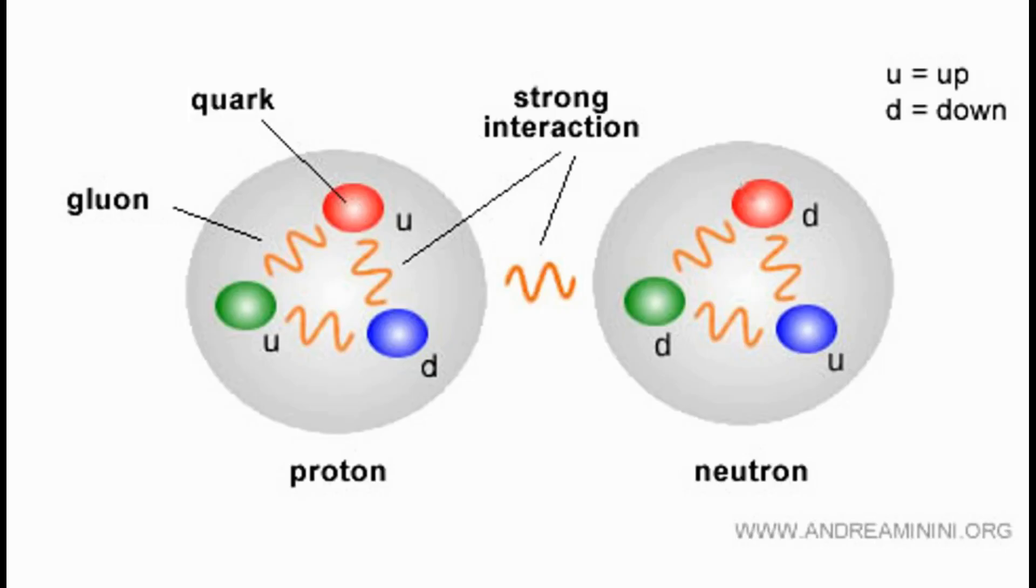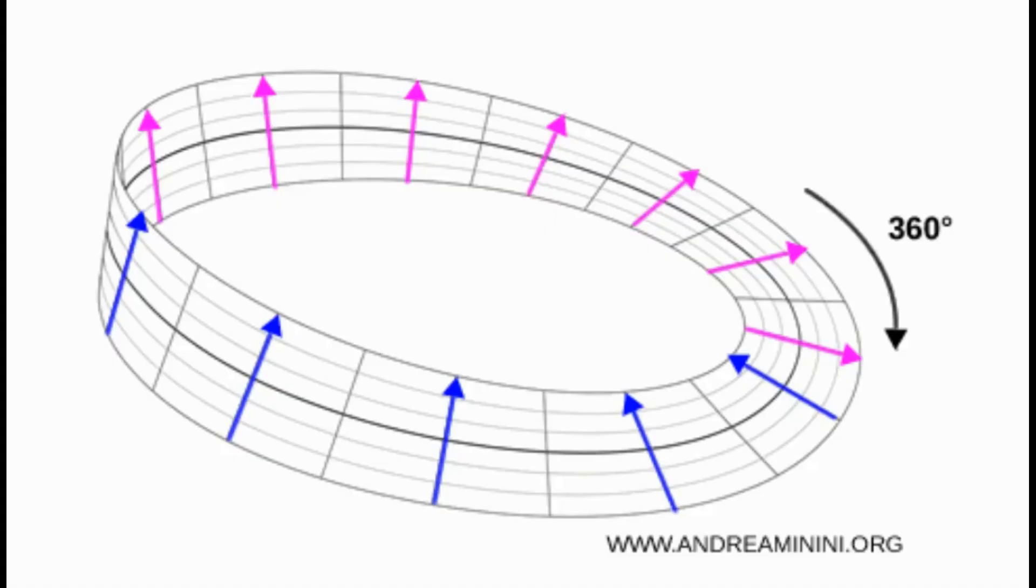Just when I think it can't get any stranger, our sources bring up the 720-degree rotation. Yes! If I rotate this cup 360 degrees, it's back to where it started. Simple. But an electron isn't. That's correct. You rotate an electron 360 degrees, and its mathematical description, its wave function, is inverted. It's out of phase with where it started. You have to turn it twice. Two full rotations, 720 degrees, to bring it back to its initial state.